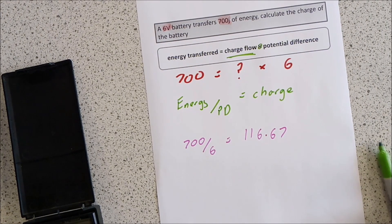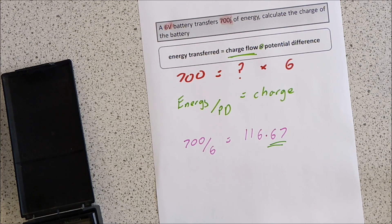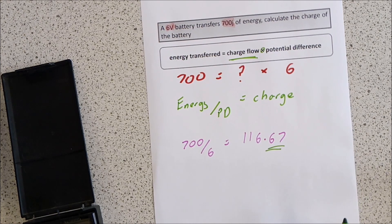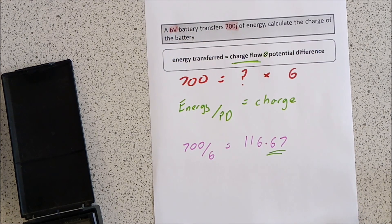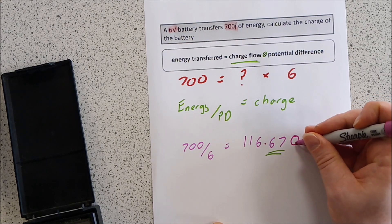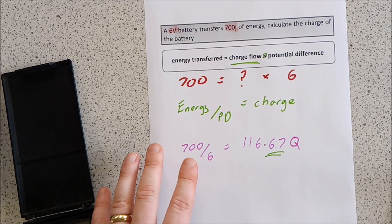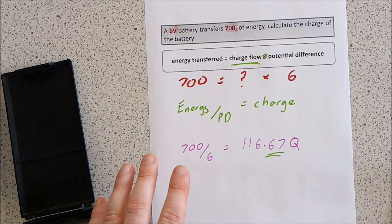Unless it says differently, I'd always do things to two decimal places — unless it specifically says three significant figures or whatever. And don't forget a unit for charge, which is Q for Coulombs. That's how we work out charge in this case.